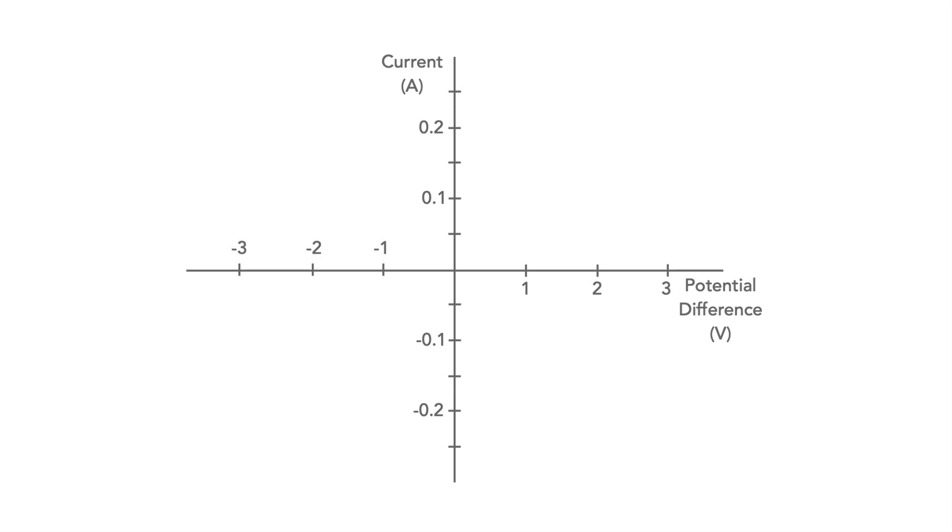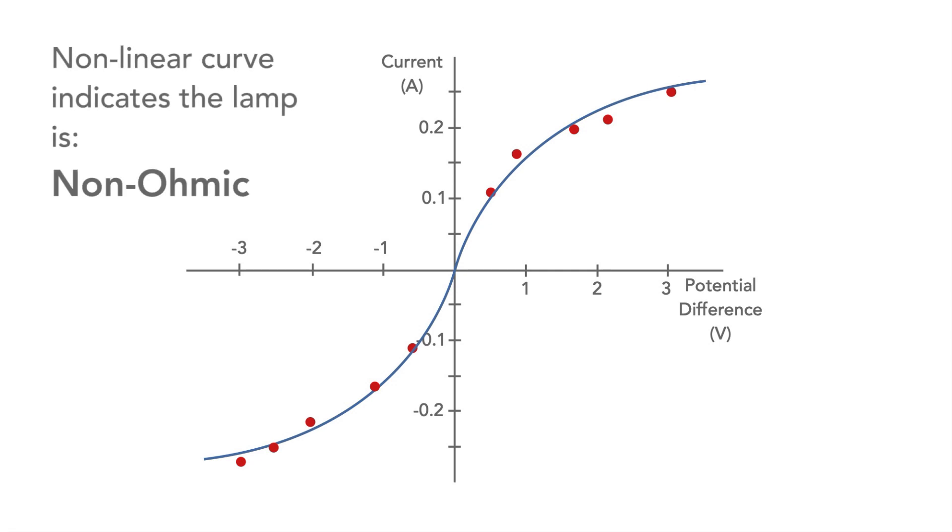Plotting the curve of the current against the potential difference, it can be seen that it's non-linear. This means that the resistance is not constant for all potentials or voltages and hence the filament lamp is non-ohmic.